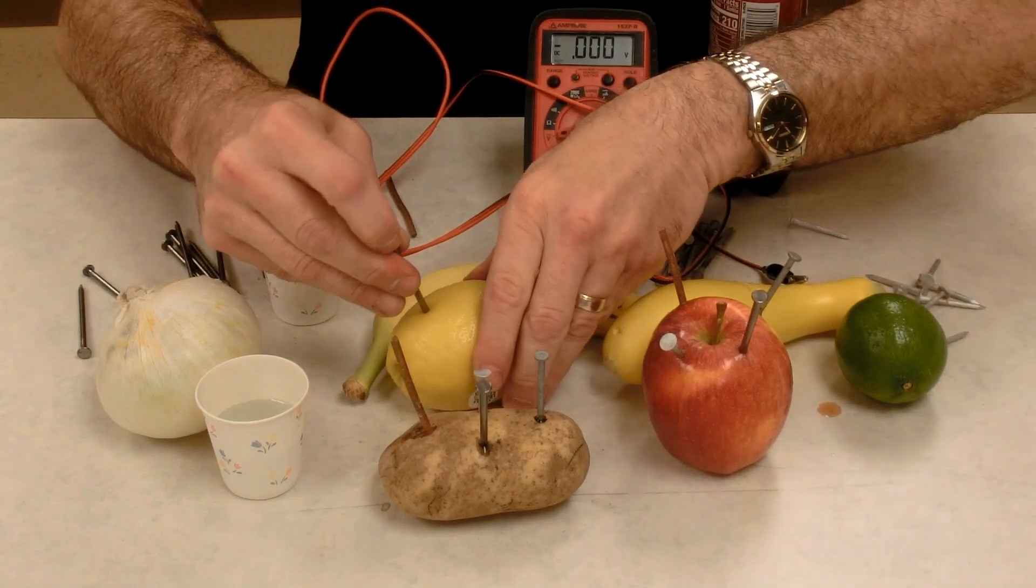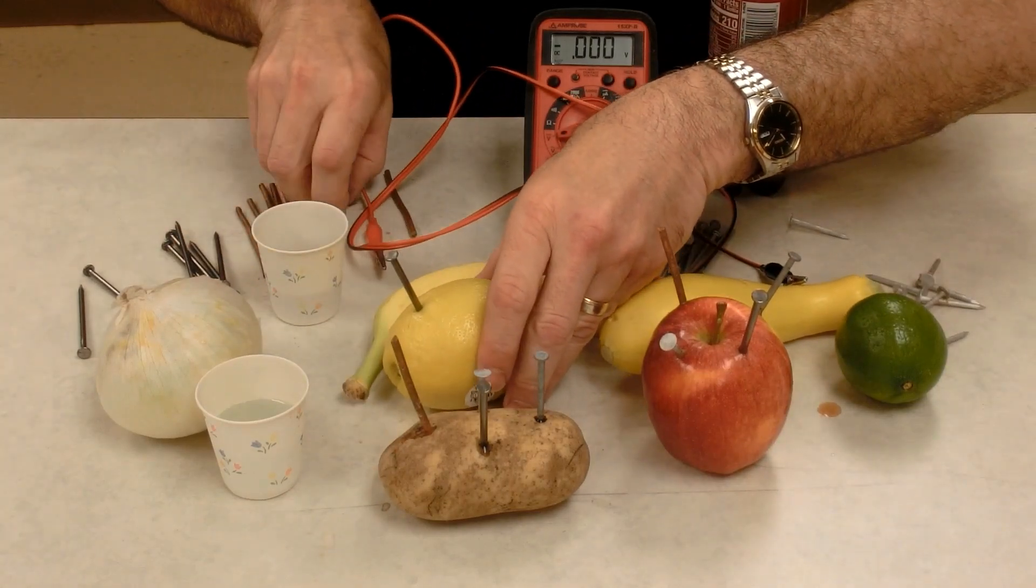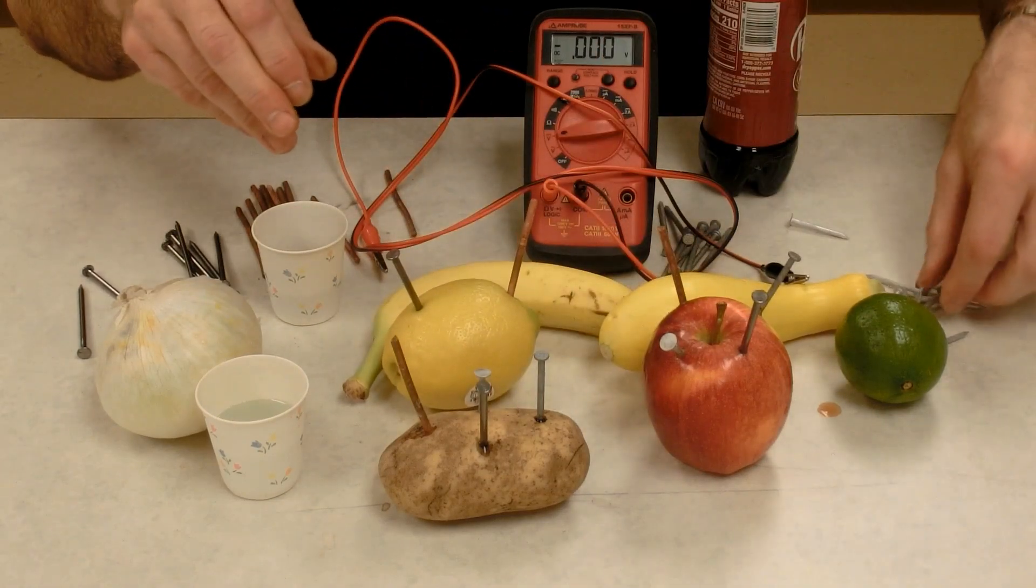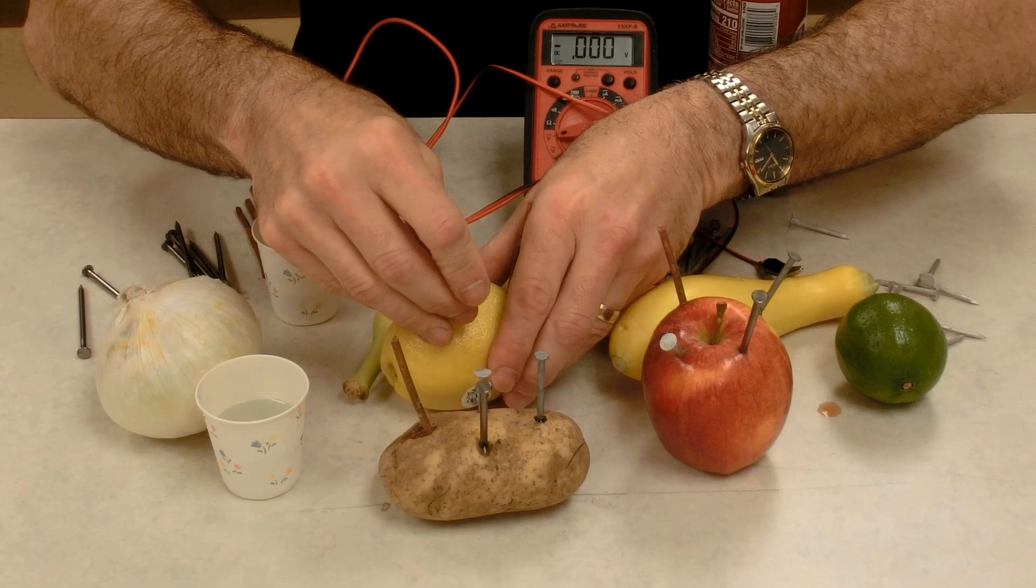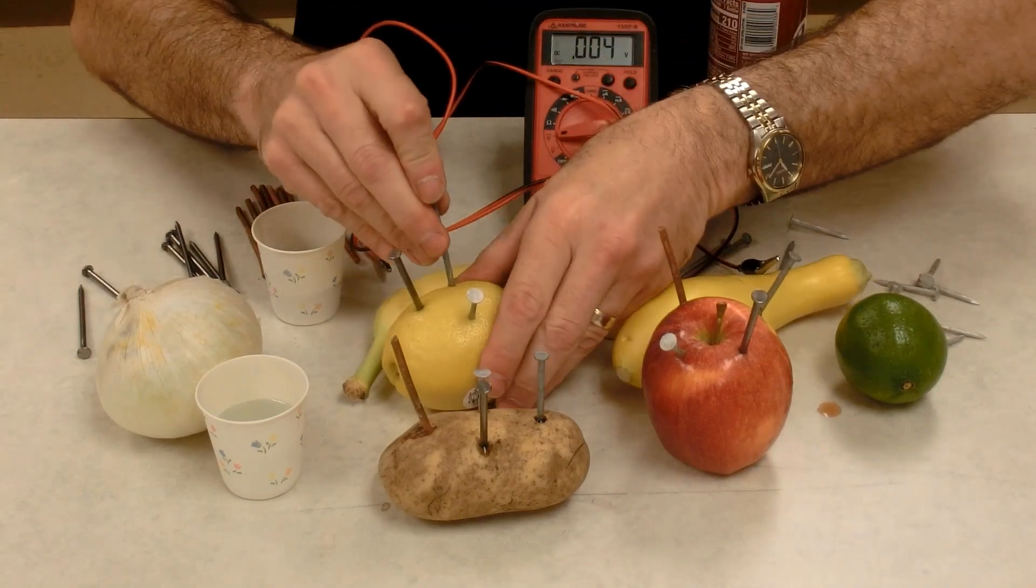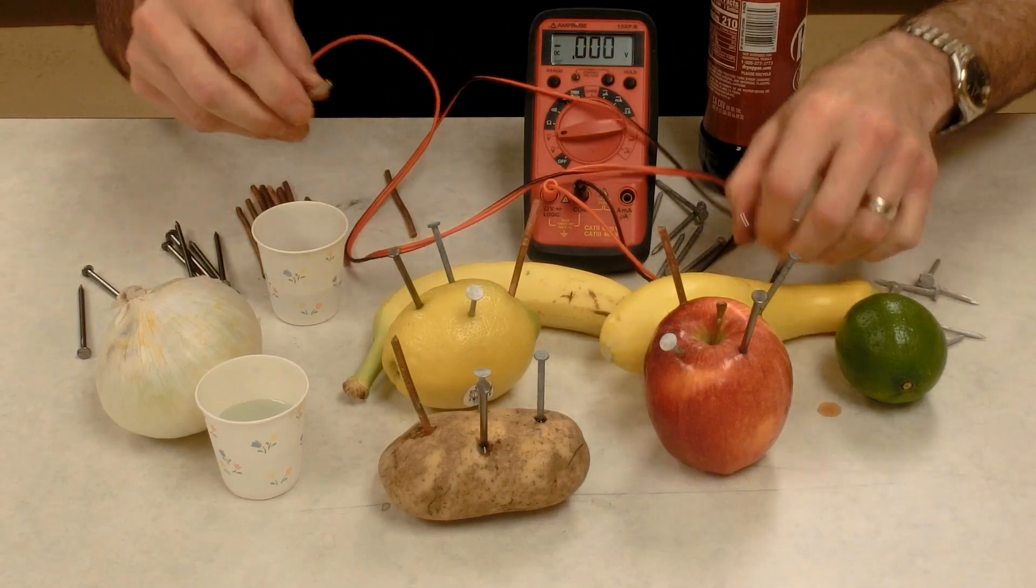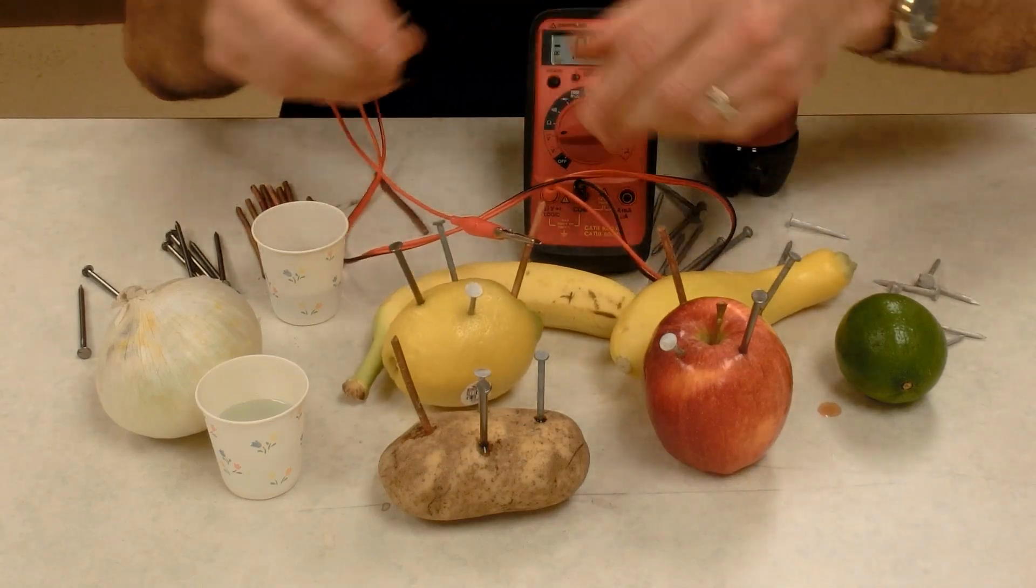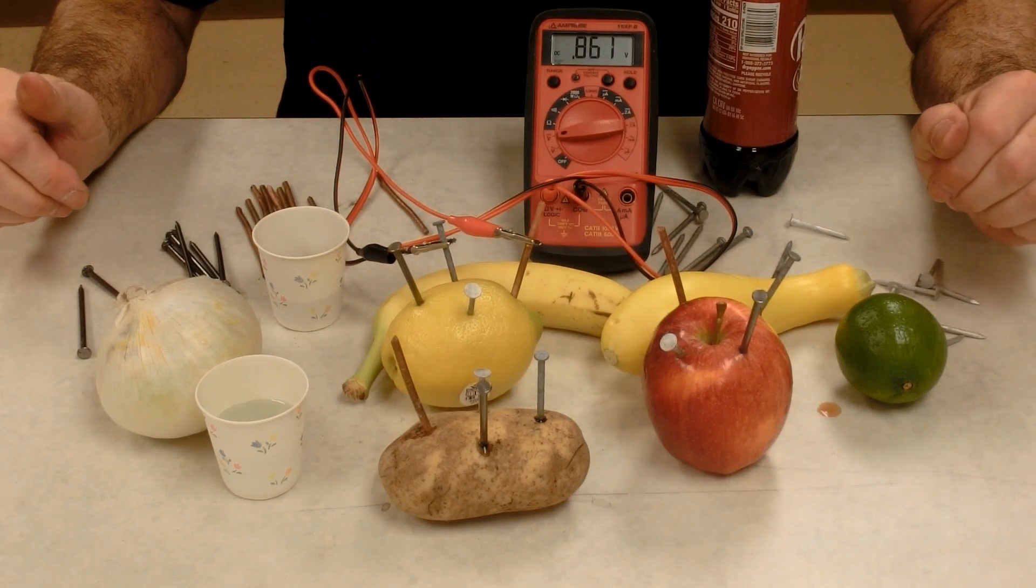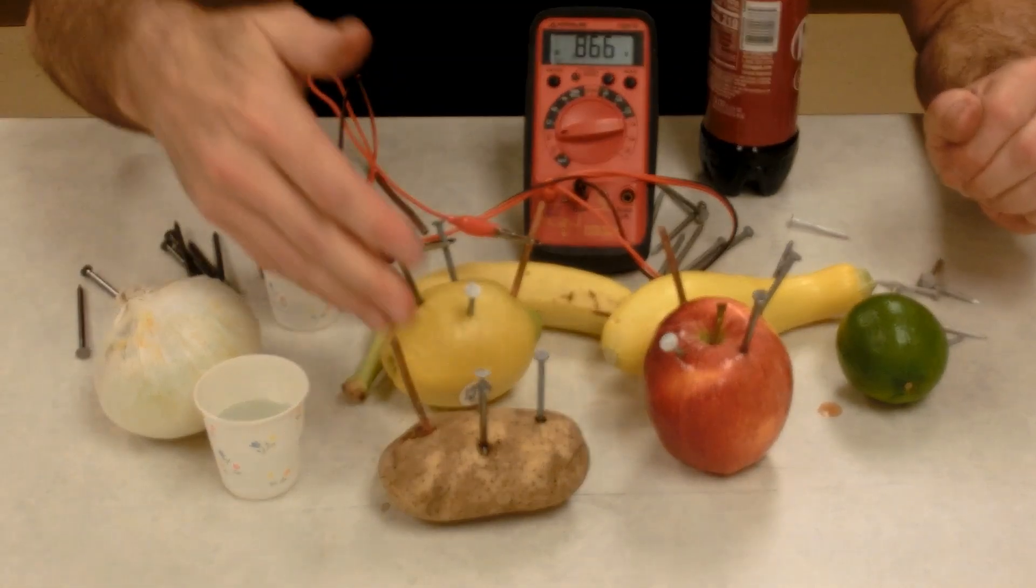We can try the lemon. Now most people think, oh, a lemon, that's got to give us the best voltage. That would be the prediction that most would make. Well, let's see. Copper, steel, aluminum, and zinc. So we'll try the zinc and copper first. It's up there at 0.85, 0.86 volts, just like the potato.